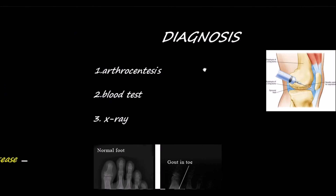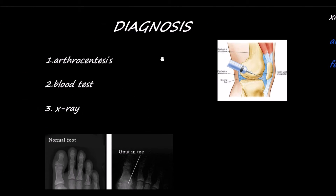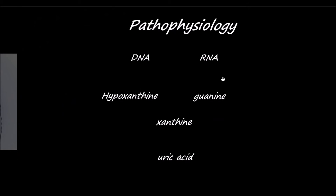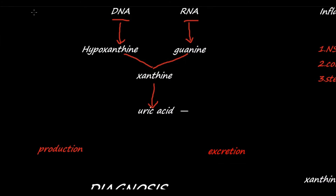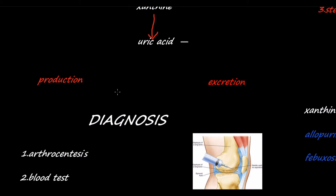Now let's talk about pathophysiology. In our body we have DNA and RNA, which are constantly broken down when new cells are made. After several pathways we end up with hypoxanthine and guanine, both of which are further broken down into xanthine, and we finally end up with uric acid. Uric acid is a waste product that should be excreted regularly, but in gout there is either increased production or decreased excretion.